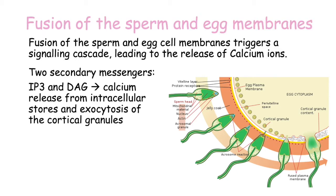Next we get the fusion of the sperm and egg cell membranes. This signaling cascade leads to the release of calcium ions, thought to occur through two secondary messengers: inositol triphosphate and diacylglycerol. These cause the release of calcium from intracellular stores and a consequent exocytosis of the cortical granules — granules full of proteins that surround the cortical area of the egg.